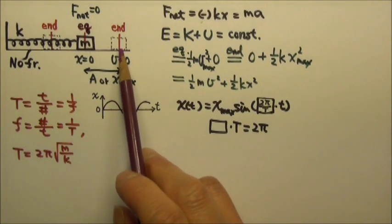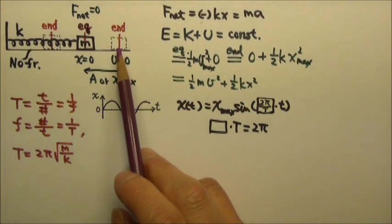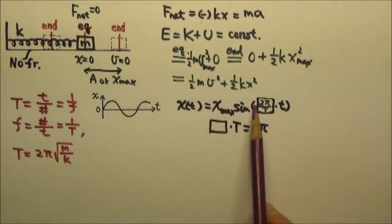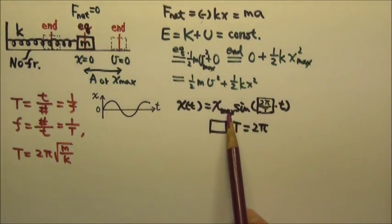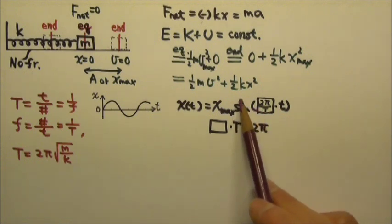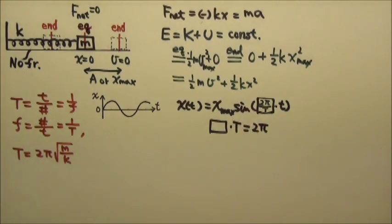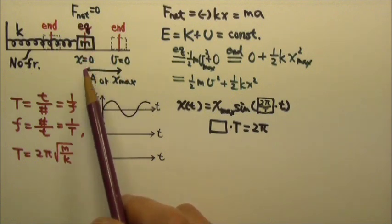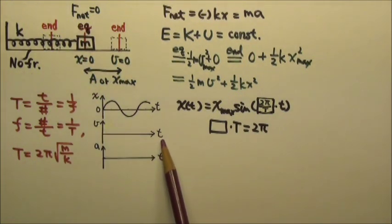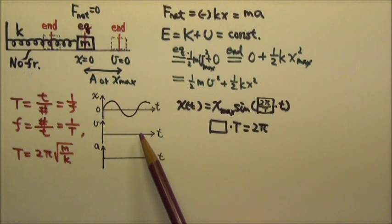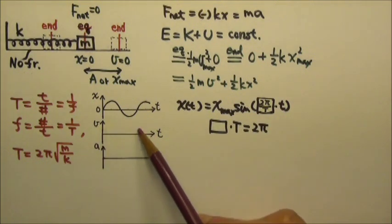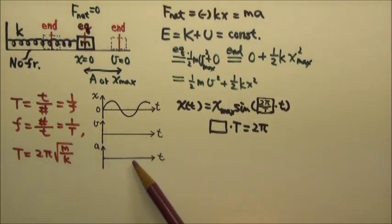If the mass is at the endpoint at t equals zero, then the position function will be a cosine instead of a sine, but the coefficient inside — 2π divided by the period — remains exactly the same. When the mass oscillates, its velocity as a function of time and its acceleration as a function of time are also sine or cosine shaped.